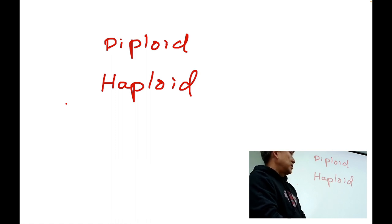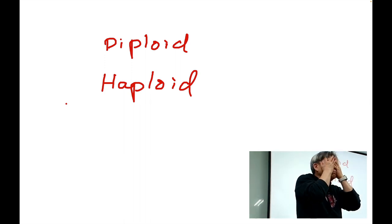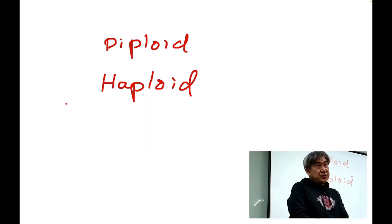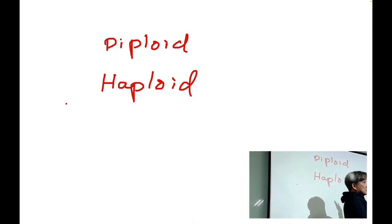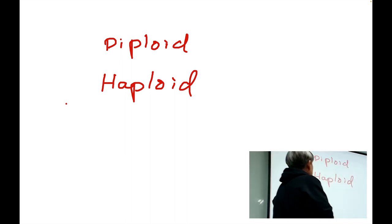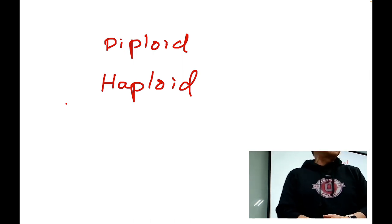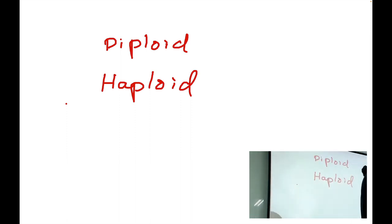Let me explain diploid versus haploid. Our normal body cells are diploid in terms of chromosome number. Diploid and haploid is terminology describing the status of our chromosome number in the cell. How many chromosomes do we have as a human? In each human cell, how many chromosomes do we have? Some would say 46, some would say 23. Which one is correct?